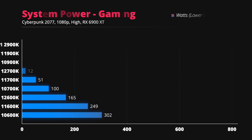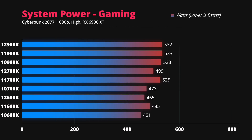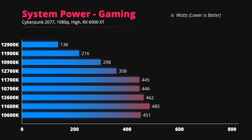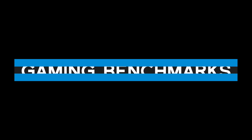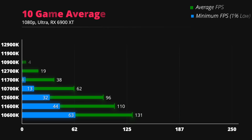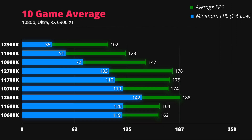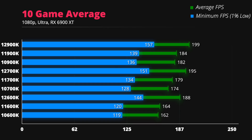Total system power consumption difference during gaming is much smaller — the 12900K PC was drawing just 67W more from the wall compared to the 12600K. Looking at the 10-game average FPS, it is crystal clear that 12th gen is significantly better in gaming as well.